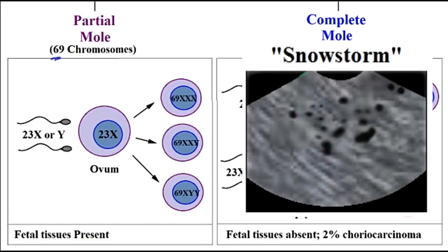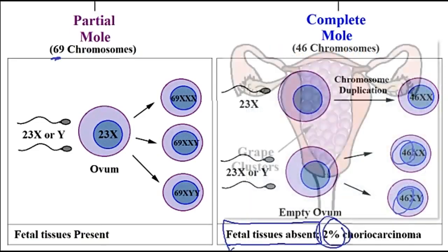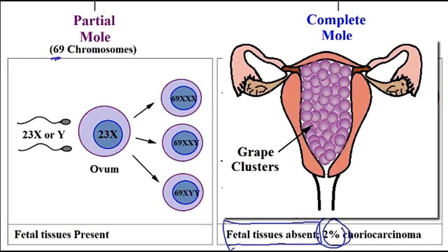In terms of the clinical findings, there is a snowstorm appearance on the ultrasound in the absence of any fetal tissues. There is an increased risk of choriocarcinoma, and due to the dilation of the villi, the complete mole has the appearance of grape clusters.